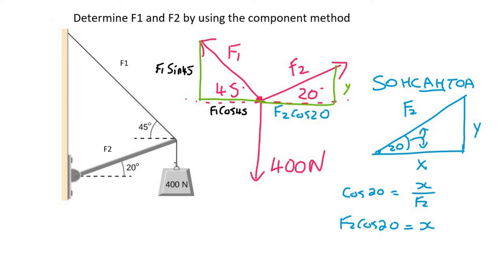Now we're going to do the vertical component, which is y, and so that's going to be opposite over hypotenuse, which is sin. And so we can say that sin 20 is equal to the opposite over the hypotenuse, and then we can get y alone as F2 multiplied by sin 20. I'm going to fill that in, so F2 sin 20.